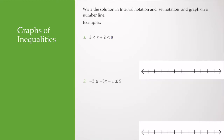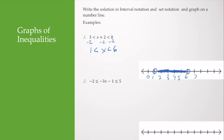I can also have compound inequalities — a three-part inequality. We treat it the same way: what we do to the middle, we do to the left and right as well. Here I have 3 is less than x plus 2, which is less than 8. I subtract 2 from all three parts to get 1 is less than x, which is less than 6. Both 1 and 6 are not included, so the interval notation is parenthesis 1, 6 parenthesis.